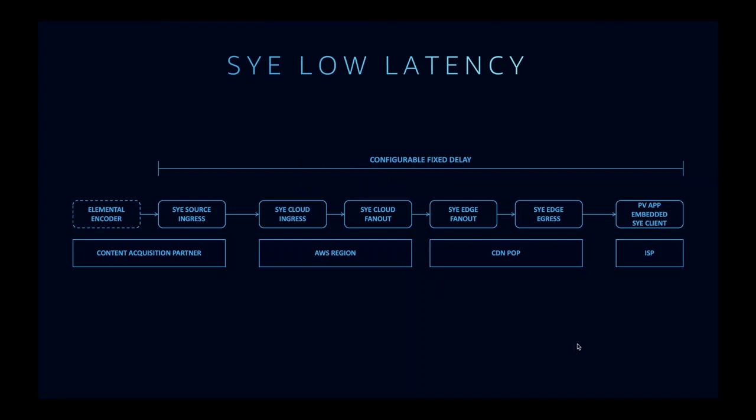Looking at how we achieve low latency: SAI is a fixed latency or fixed delay system. It's configurable, but once it's set it never drifts. We configure the latency from where we pick up the sources all the way to the client. This configured delay is then used to do retransmission of lost packets between servers, and also mostly between the server edge and the client.